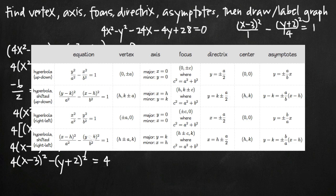One of the easiest ways to find all the values for the vertex, axis, focus, directrix, center, and asymptotes is to identify h, k, a, b, and c from the equation. We have x minus 3, so h equals 3. We have y plus 2, so k equals negative 2. The denominator of the x term is 1, so a squared equals 1 and a equals positive or negative 1. The denominator of the y term is 4, so b squared equals 4 and b equals positive or negative 2.